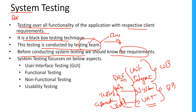Before conducting system testing we should know the requirements, because until and unless we know the requirements and how the application is behaving, we cannot test anything. We should know each and every flow of the application, what different inputs we have to provide, and what expected output we should get. Only then can we perform system testing effectively.